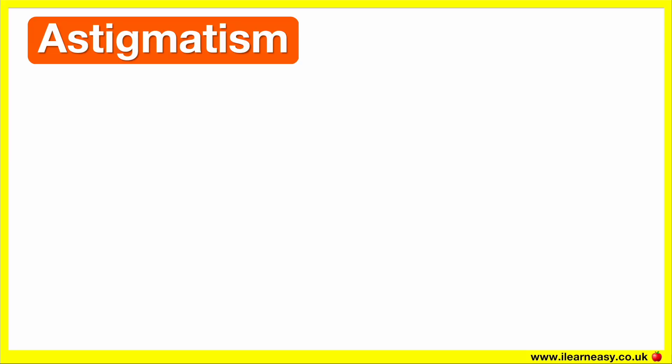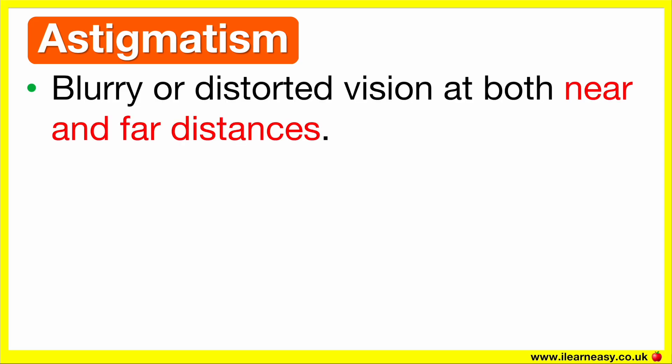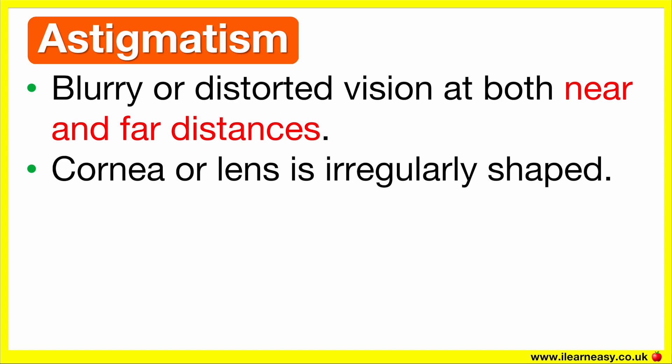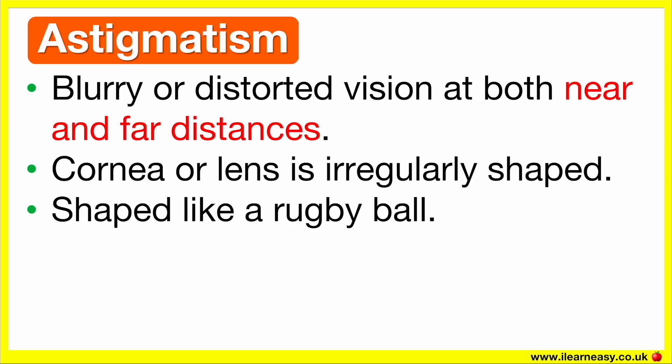Astigmatism is a common vision condition. In simple terms, it's when a person experiences blurry or distorted vision at both near and far distances. The cause of astigmatism is that the cornea or lens is irregularly shaped. So instead of being round, like a basketball, it's shaped more like a rugby ball — like an oval shape.